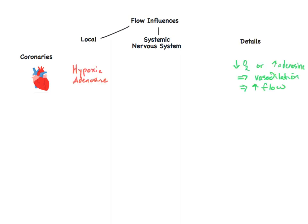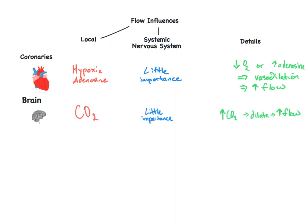The brain is quite similar in that local factors dictate the flow, but here the most important mediator of flow is the CO2 level. You will learn more about this mechanism when discussing acid-base disturbances.